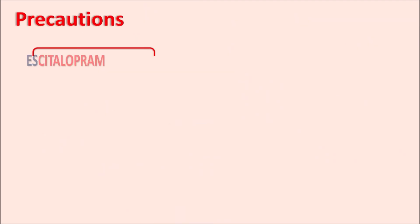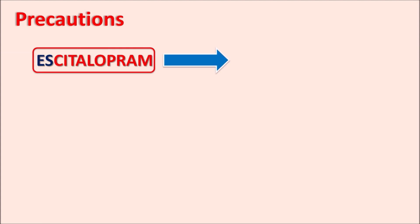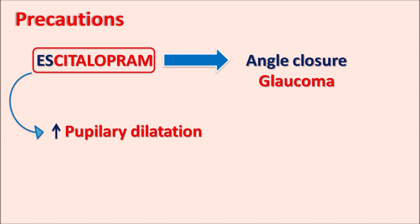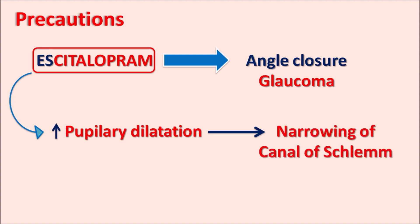An important precaution is that escitalopram can worsen angle-closure glaucoma (ACG) — a condition with increased intraocular pressure due to decreased drainage of aqueous humor. Escitalopram increases pupillary dilation, which causes narrowing of the canal of Schlemm, the drainage channel for aqueous humor. This increases accumulation of aqueous humor, resulting in increased intraocular pressure. In patients already having angle-closure glaucoma, escitalopram can further worsen glaucoma, resulting in blurred vision or loss of vision.